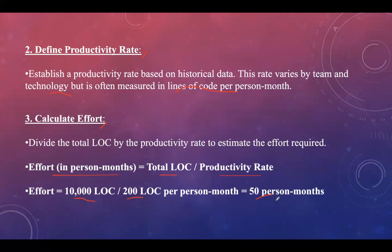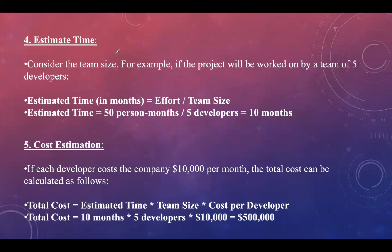Step four is to estimate time. If the project will be worked on by a team of 5 developers, the estimated time in months is calculated using the formula: effort divided by team size. Effort is 50 person-months divided by 5 developers equals 10 months. So 5 developers can complete the task in 10 months, whereas a single person would take 50 months.